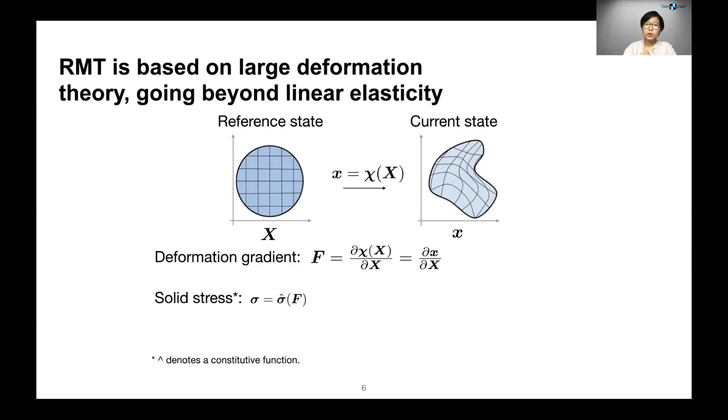Take this object on the left. We can define a reference state. Typically, we can also define a forward mapping χ that takes us from the reference state to the current state. Then we can calculate deformation gradient F by taking derivatives against the reference configuration. Plugging this F into any constitutive relations, we get our solid stress.